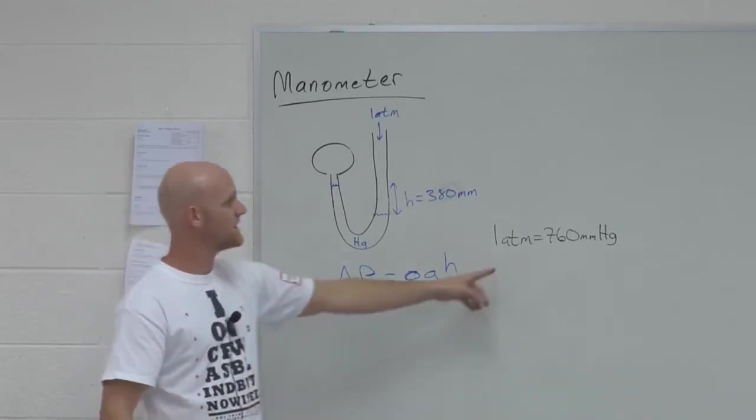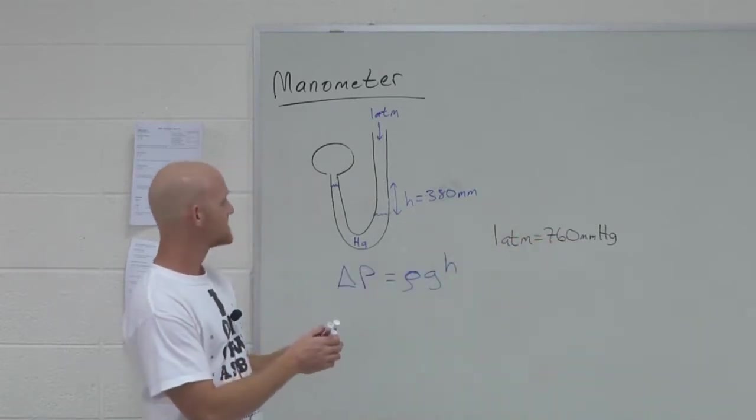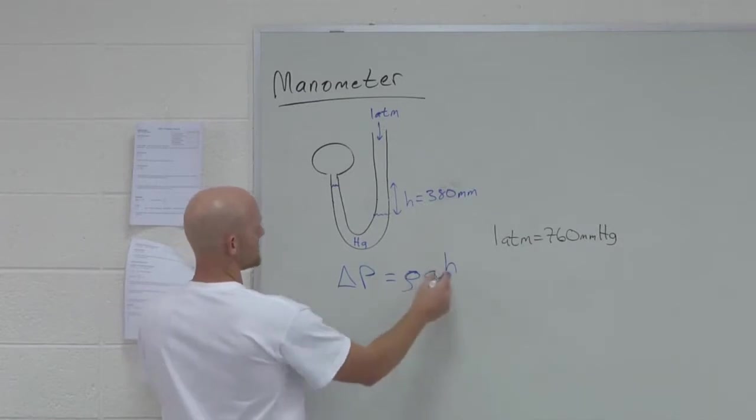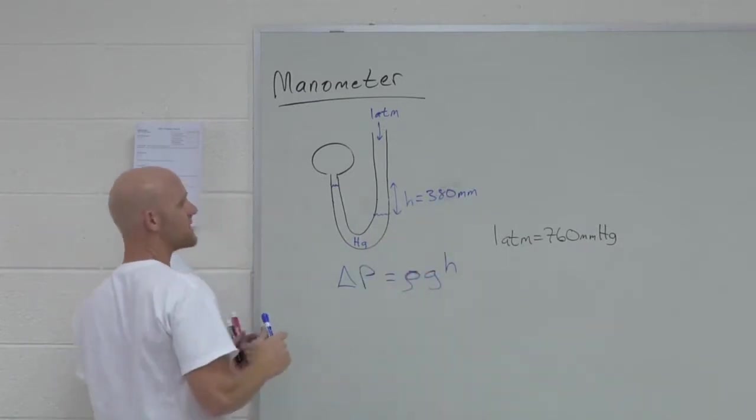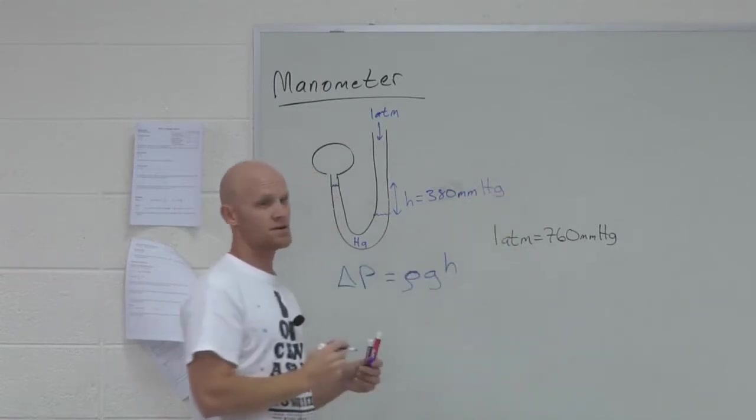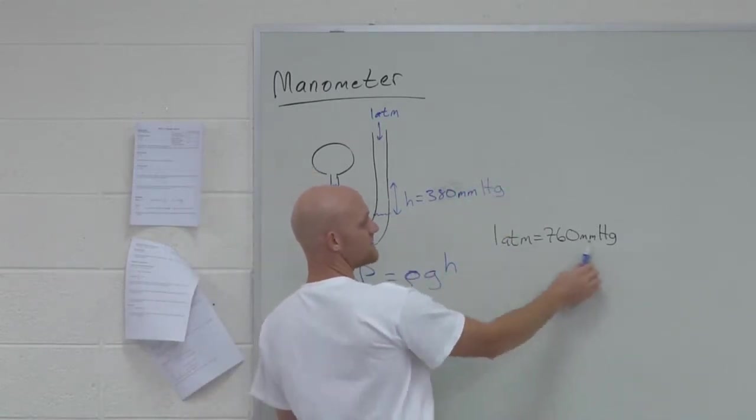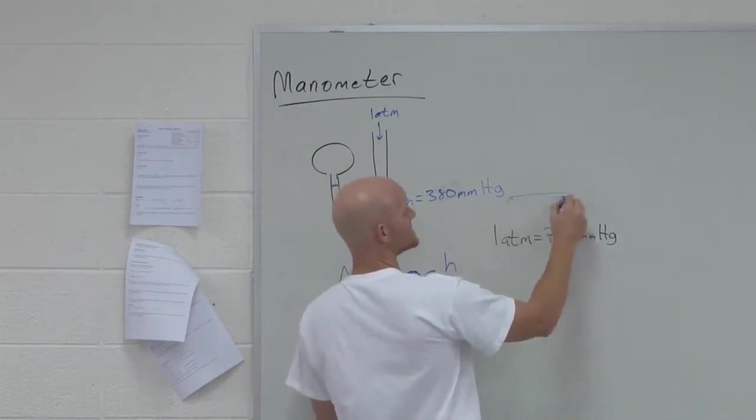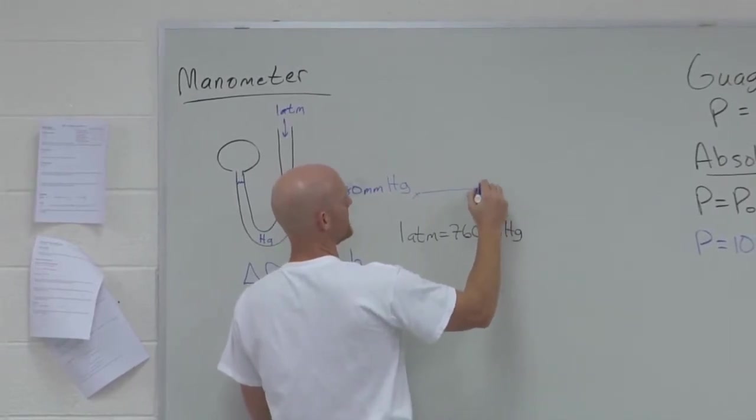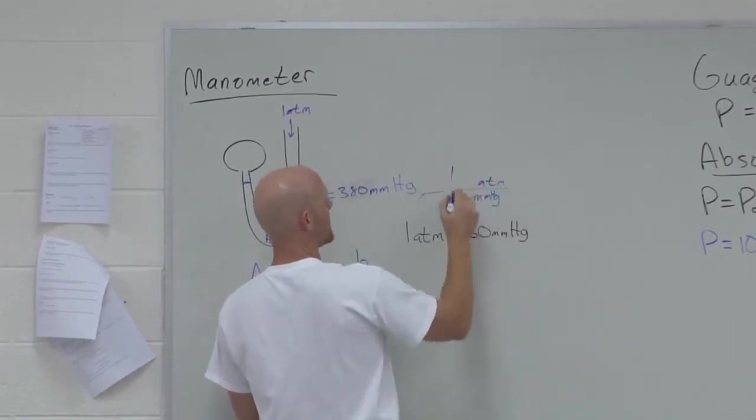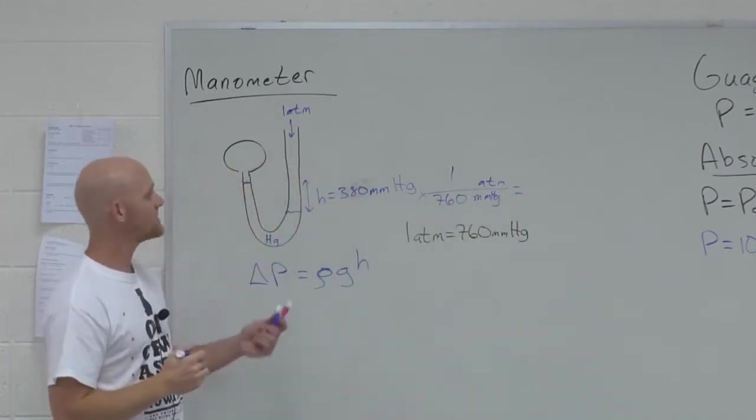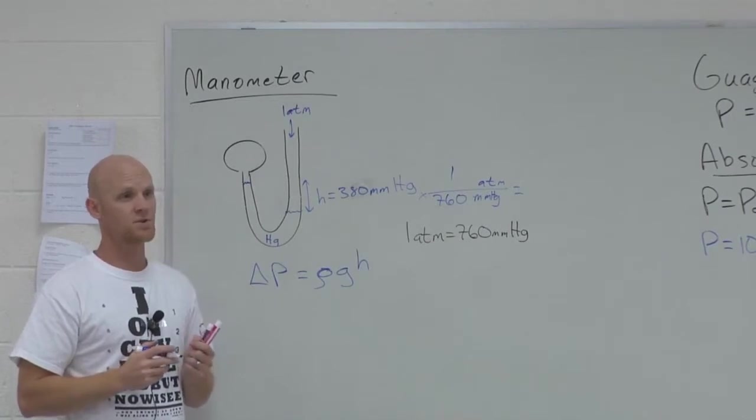In this case though, because I know this lovely conversion, well in this case, the delta P, or the H here instead, rather, is 380 millimeters, specifically millimeters of mercury. And here, because these are the equivalent terms in millimeters of mercury in atmospheres, I can kind of just use that as a conversion factor. I'll put millimeters of mercury down here, I'll put atmospheres up here, and one atmosphere is the same as 760 millimeters of mercury. And so, I can kind of express this in atmospheres, if I so desire.